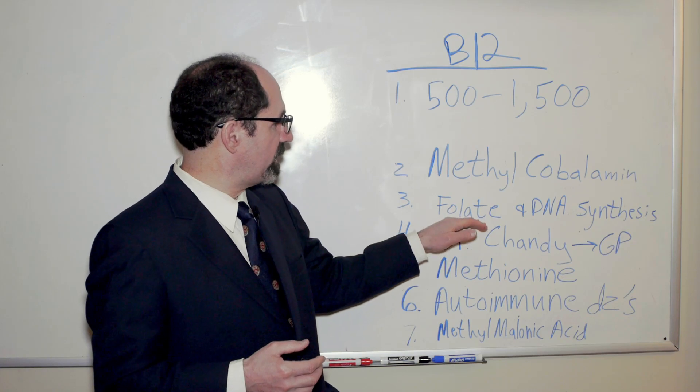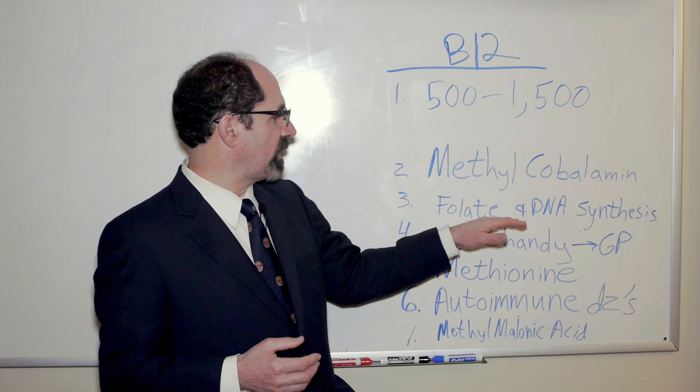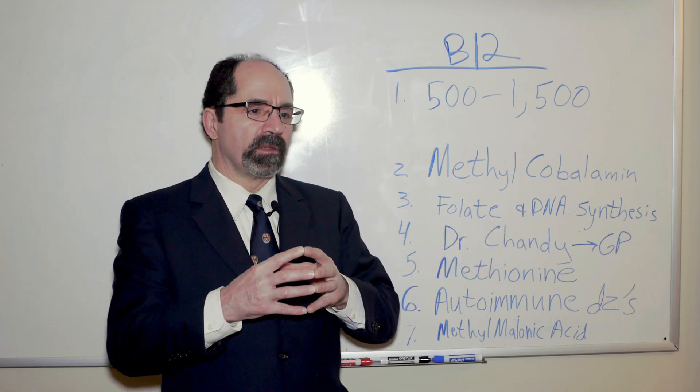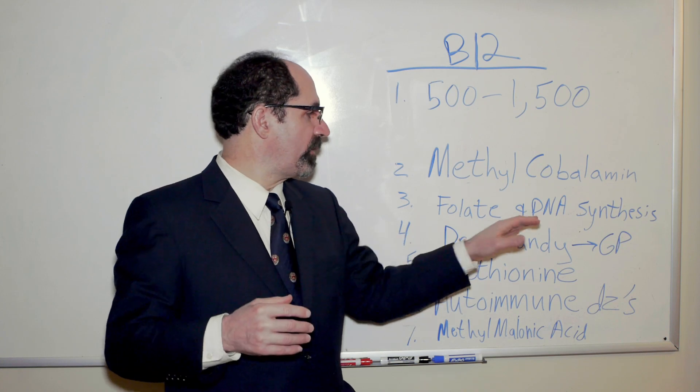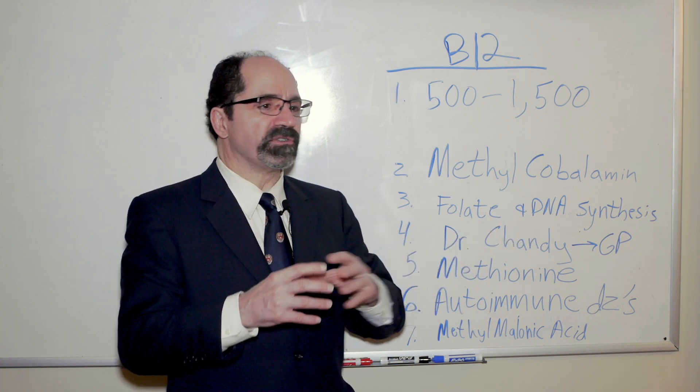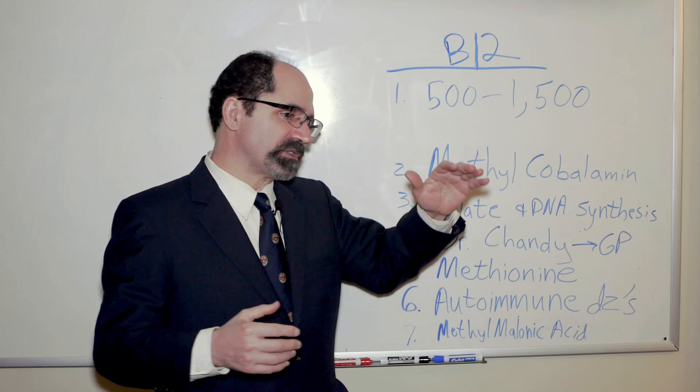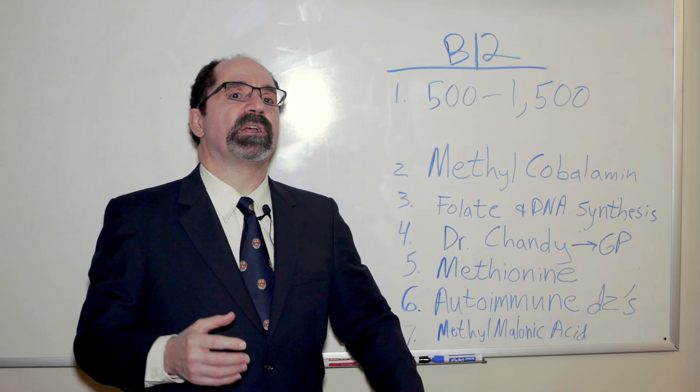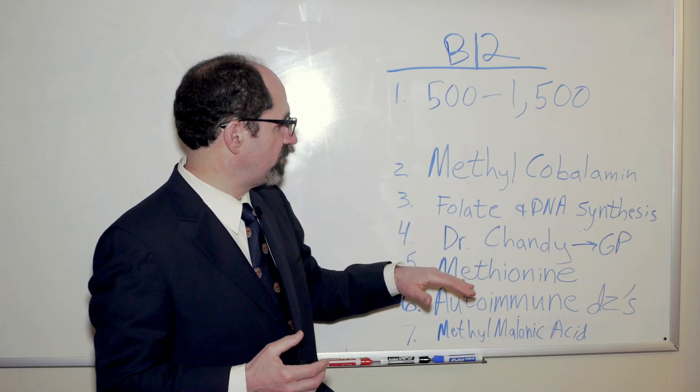One thing that can happen too is typically, you know, with the folate's deficient, you can't make your red blood cells as fast as you like. And you'll get red blood cells that can't effectively divide so well. So they're bigger, the primary immature form of the RBC. So you get this macrocytosis, big cell, megaloblastic anemia is what it's called because you'll have a decreased number of red blood cells, but the ones that you have are bigger. So it's called a megaloblastic anemia, which is characteristic of a folate deficiency.